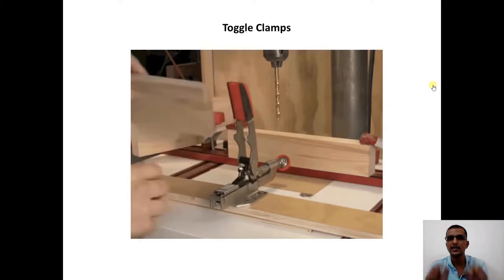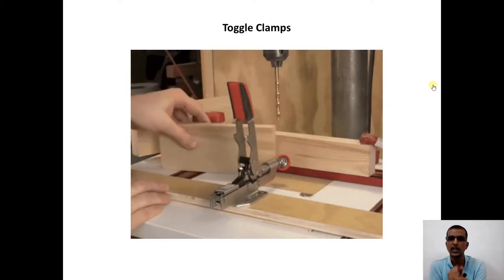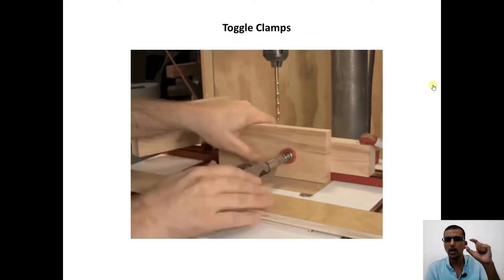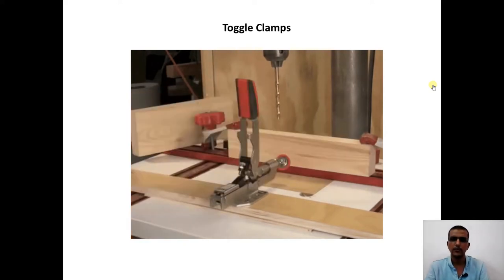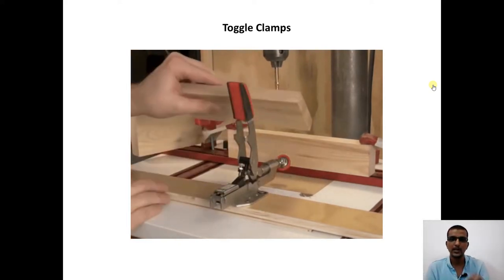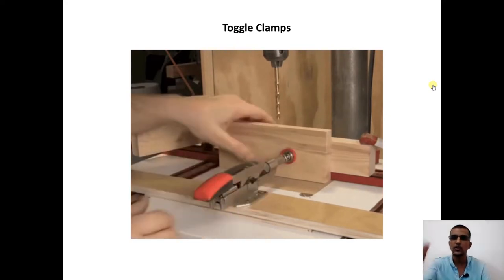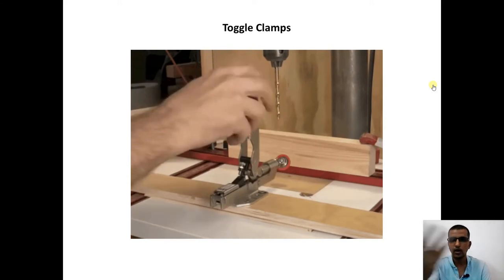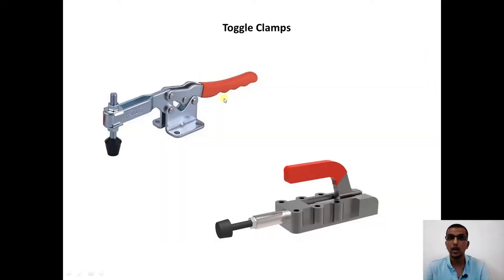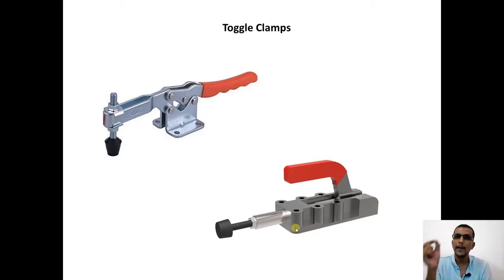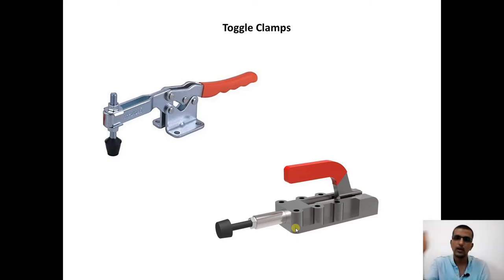Another application of the toggle mechanism is in toggle clamps. By applying only a small amount of force, the clamp holds the object firmly — once engaged, it cannot be moved. The small force gets magnified and holds at a higher magnitude, making it useful as a jig or fixture for machining operations. Toggle clamps are available in two varieties: vertical and horizontal. This wraps up the toggle mechanism, which amplifies small forces into larger ones to overcome resistance.